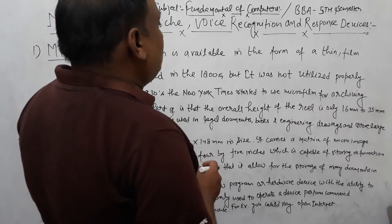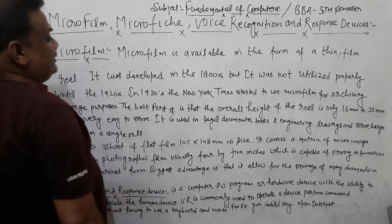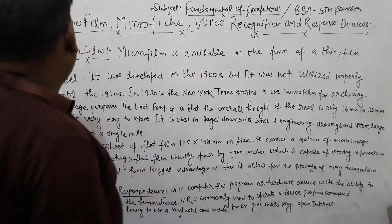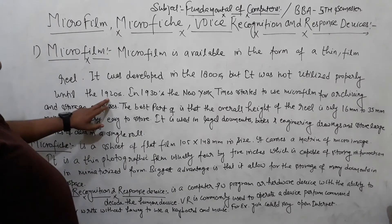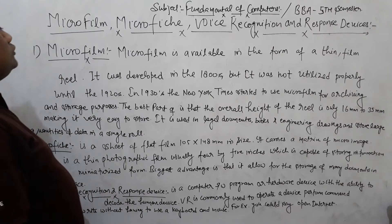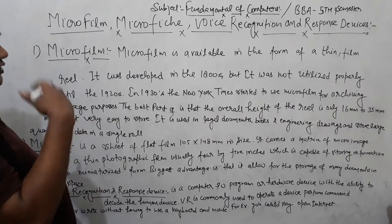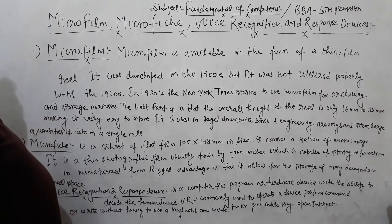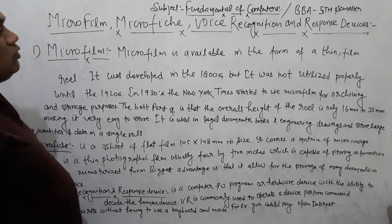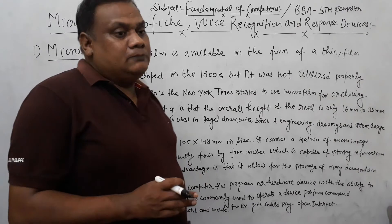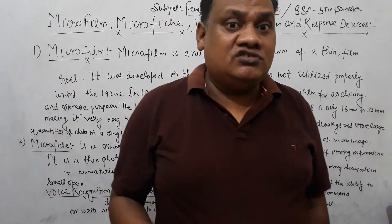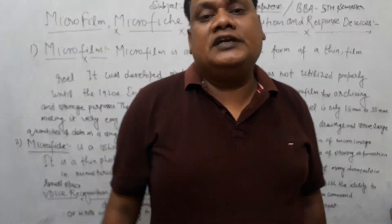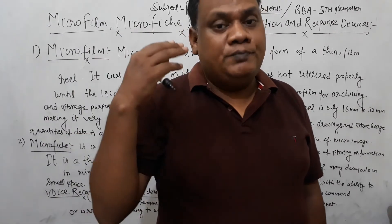Microfilm was developed in the 1800s, but it was not utilized properly until the 1920s. In the 1930s, the New York Times started using microfilm for archiving and storage purposes. Today, large organizations use microfilm for projects and newspapers.